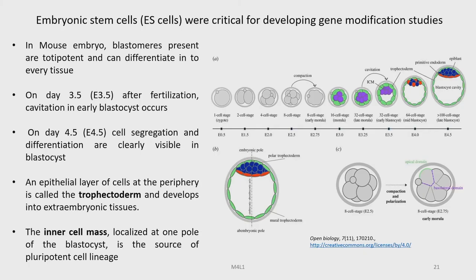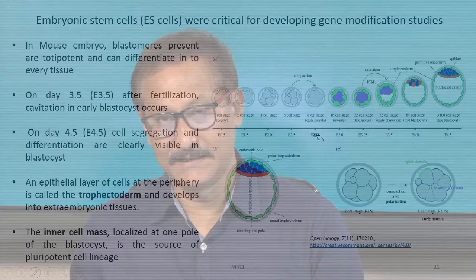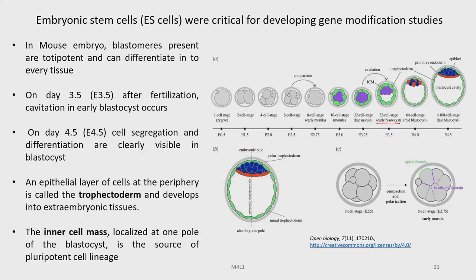Let us look at cell division. Starting from the 1-cell stage zygote, which divides to become 2-cell, 4-cell and so on, after the 8-cell stage you have the early morula stage, then at 32 cells the late morula, followed by transformation into early blastocyte, mid-blastocyte, and finally late blastocyte with over 100 cells.